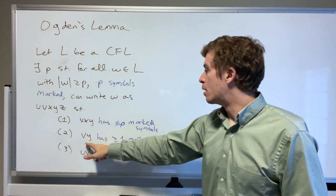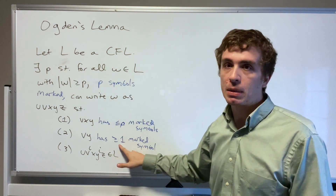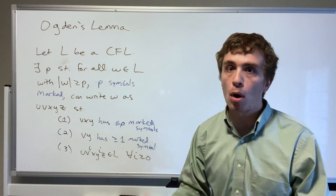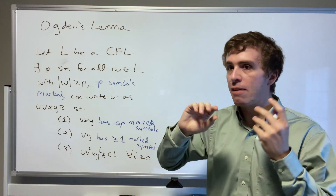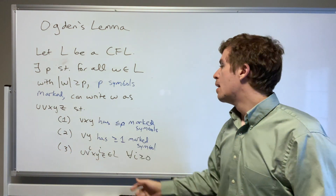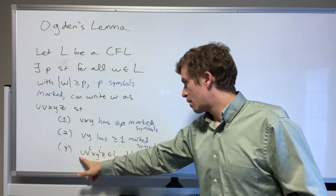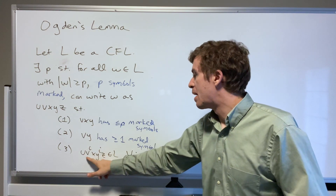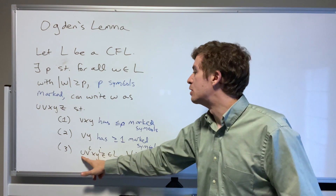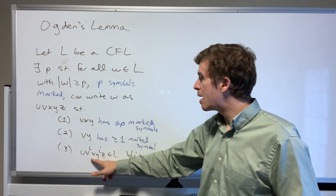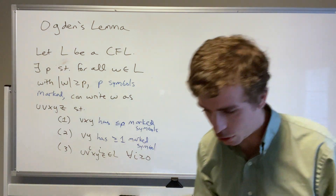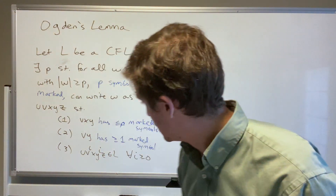This is stronger than the usual pumping lemma: instead of just saying the lengths of the two pieces are at least one, we say there's at least one marked symbol — we could have more unmarked things, but at least one marked thing. Additionally, we can pump the second and fourth pieces, meaning u v^i x y^i z is in L for all i.